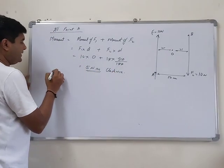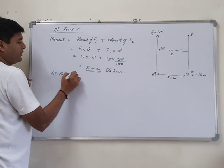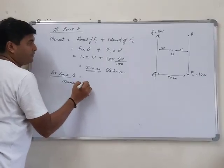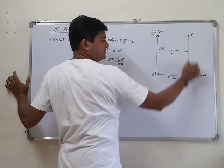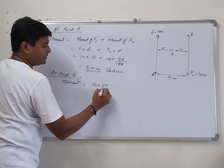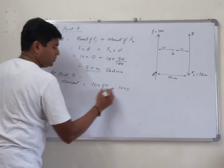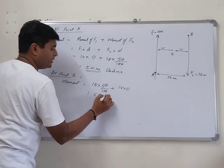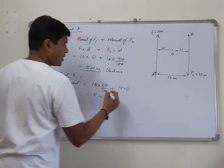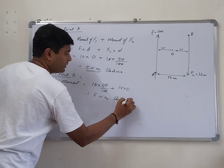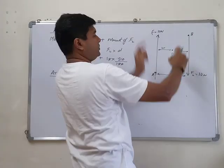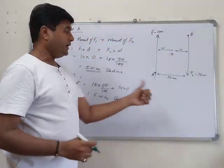For point B, the same logic applies. The moment equals 10 into 50 upon 100 plus 10 into 0, because F2 acts at point B itself. This again gives 5 newton meter. The direction is clockwise, because at point B the force produces clockwise rotation.